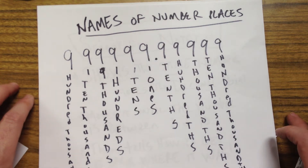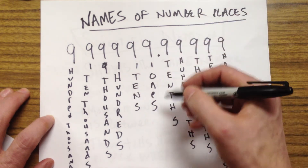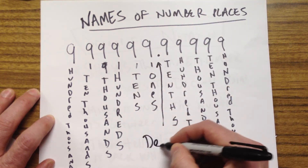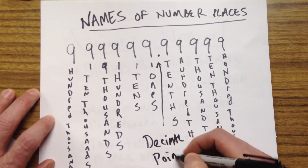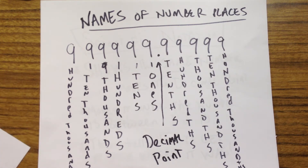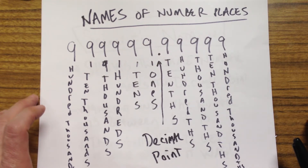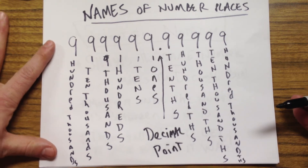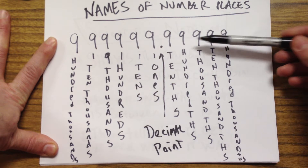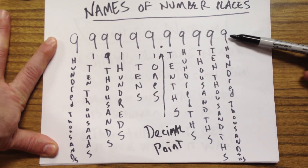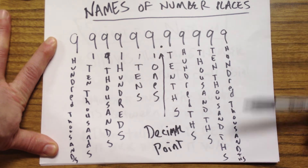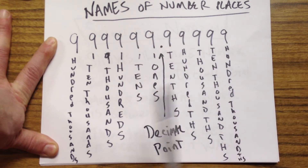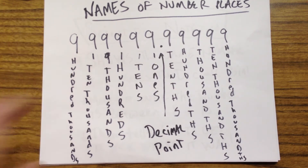First, a little review of number places — they all have names. Every number, whether it's actually written out or not, has a decimal point. It's where you change from the greater-than-one values to the less-than-one values. To the right of the decimal point: tenths, hundredths, thousandths, ten-thousandths, hundred-thousandths, then millionths, ten-millionths, etc. To the left: ones, tens, hundreds, thousands, ten-thousands, hundred-thousands, and then millions.